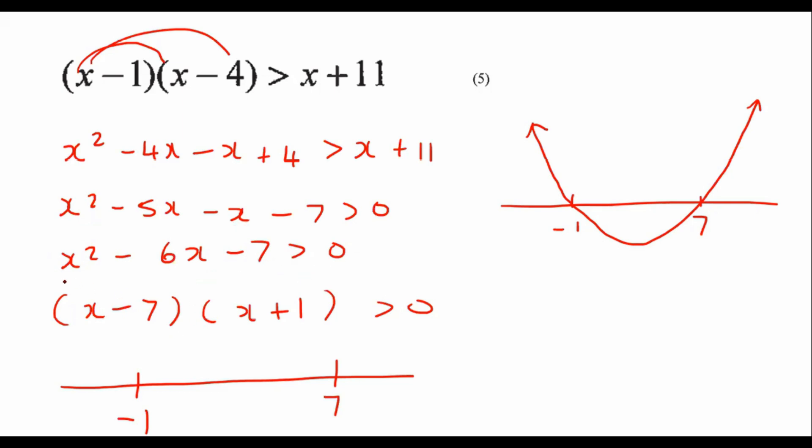So that's a parabola. Now, what do we want to know? We want to know where is this parabola bigger than zero? It means above the x-axis. So where would that be? That would be over here and over here. That is where the graph is above the x-axis. And so we can say that the answer will be when x is smaller than minus 1, or when x is bigger than 7.